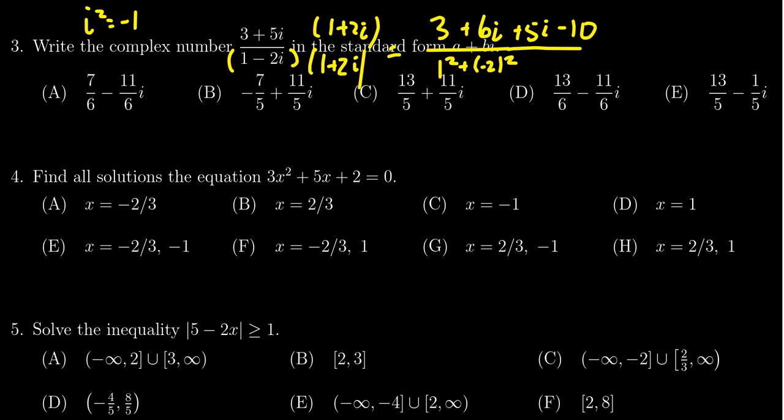Combining like terms in the numerator, we see 3-10 is -7. 6i+5i is 11i. In the denominator we have 1²=1 and (-2)²=4. So the denominator is 5.